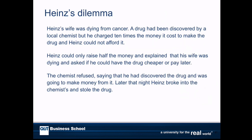In the Heinz dilemma, we have a person, Heinz, whose wife is dying from cancer. There's a drug discovered by a local chemist, but it costs 10 times what it costs to make, and Heinz can't afford it. He's already tried to get it for less money, but the chemist refuses, saying he discovered the drug and needs to make money from it. So later that night, Heinz breaks in and steals the drug.